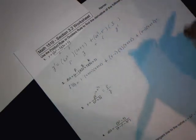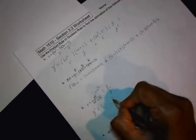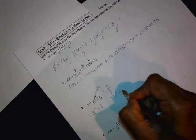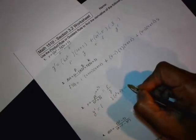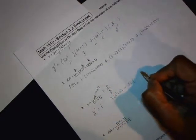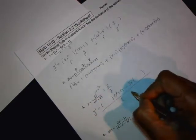Okay, so, let me zoom that in a bit. I'm able to zoom in. All right, so, y prime, you take the derivative of the top, keep the bottom as it is, minus, keep the top as it is, take the derivative of the bottom, all over, bottom squared.